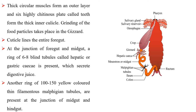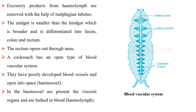At the junction of foregut and midgut, a ring of six to eight blind tubules called hepatic or gastric caeca is present which secrete digestive juice. Another ring of 100 to 150 yellow colored thin filamentous Malpighian tubules are present at the junction of midgut and hindgut. Excretory products from haemolymph are removed with the help of Malpighian tubules. The midgut is smaller than the hindgut which is broader and is differentiated into ileum, colon and rectum. The rectum opens out through the anus.